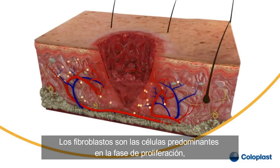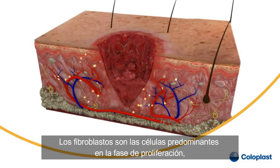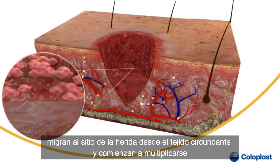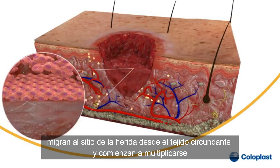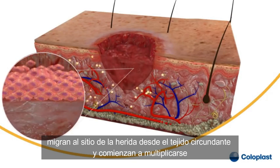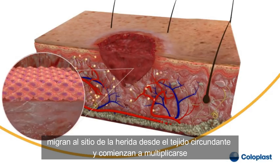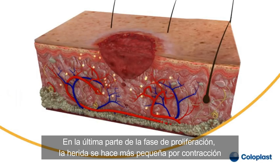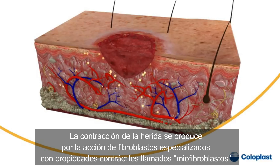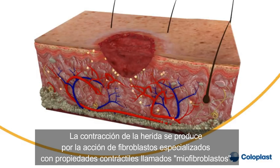Fibroblasts are the predominant cells in the proliferation phase. They migrate into the wound site from the surrounding tissue and start to multiply. In the last part of the proliferation phase, the wound is made smaller by wound contraction, which is brought about by specialized fibroblasts with contractile properties called myofibroblasts.